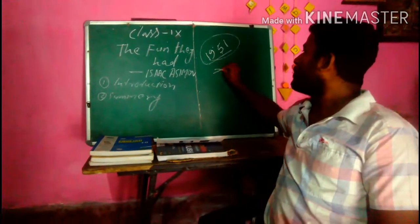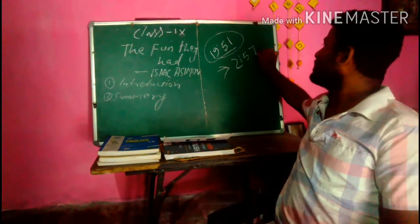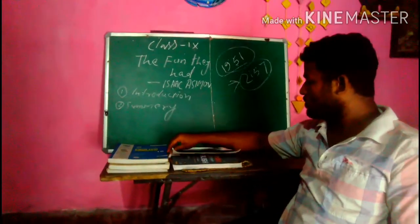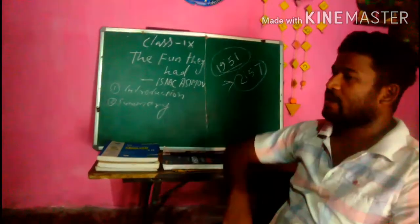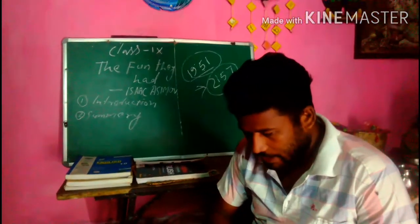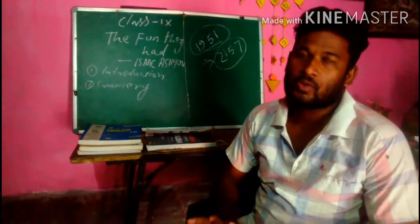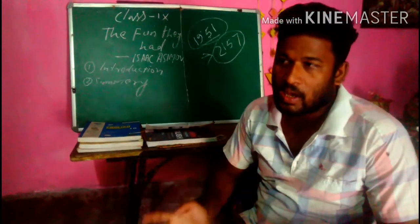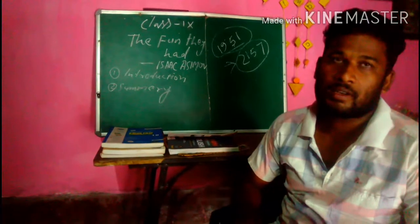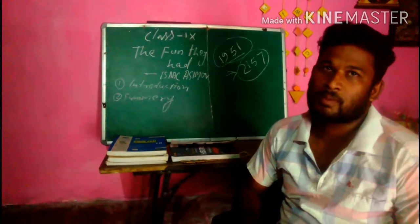1951 is the year when the story was written, and it tells about the time of 2157 — the year yet to come. Near about 200 years ahead, there will be a society, there will be a classroom, but it's going to be totally run by machine — a mechanical class. A total difference, and that is the main theme of the story.